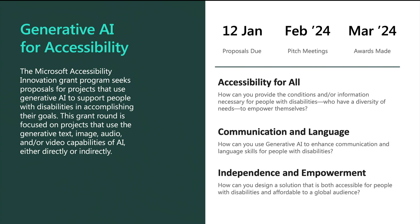The three themes for this current grant funding round include Accessibility for All — considering how you can provide the conditions and/or information necessary for people with disabilities who have a diversity of needs to empower themselves. Communication and Language — how you can use Generative AI to enhance communication and language skills. And Independence and Empowerment — designing a solution that is both accessible and affordable to a global audience.